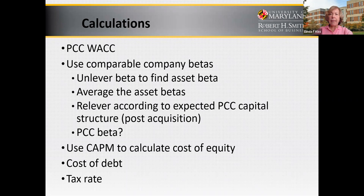Then re-lever the average beta according to the expected capital structure of Precision Castparts post-acquisition. What is the expected capital structure? We have a very large company taking over a smaller company, PCC. We can assume that the capital structure of the larger company — in this case Berkshire Hathaway — is going to prevail. Whatever capital choices Berkshire Hathaway has made will apply in turn to Precision Castparts.